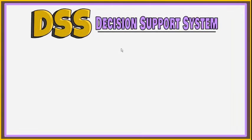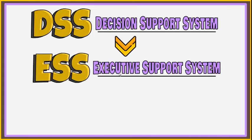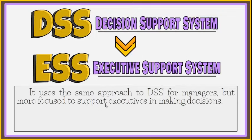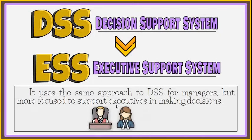In addition to DSS for managers, other systems use the same approach to support executives, called Executive Support Systems, or ESS. An example is a system used for sales forecasting, useful to people at the topmost level of the organization's management hierarchy — the firm's president, vice presidents, and members of the board of directors — to make better decisions.